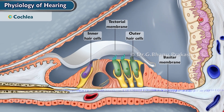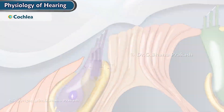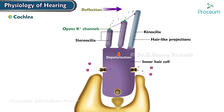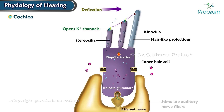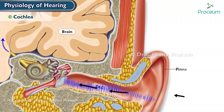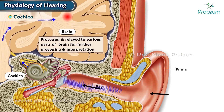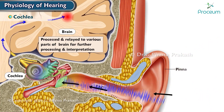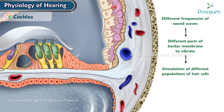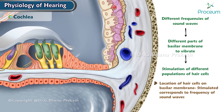As the basilar membrane vibrates, the hair cells move back and forth, causing their hair-like projections to bend. This bending triggers the release of the neurotransmitter glutamate, which in turn stimulates the auditory nerve fibers connected to the hair cells. The auditory nerve fibers then transmit electrical signals from the cochlea to the brain stem, where they are processed and relayed to various parts of the brain. Different frequencies of sound waves cause different parts of the basilar membrane to vibrate, stimulating different populations of hair cells, with the location corresponding to the frequency of the sound waves.